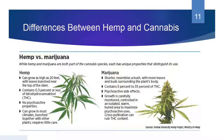Marijuana contains usually between 5 to 35% THC. The psychoactive side effects are significant — anyone who has taken cannabis for medical or recreational purposes knows there is a feeling of euphoria, your body relaxes, and you feel less tense. Growth is carefully monitored and controlled in an isolated, warm, humid area to maximize psychoactive uses. Cross-pollination can ruin the THC content. The horticulture aspect is a significant part of learning about cannabis because it really takes a delicate hand when growing to grow the best quality.